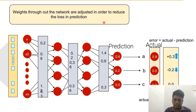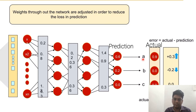The weights are adjusted to reduce the loss in prediction. After updating the weights, the new predicted values are 0.6, 0.2, and 0.0. Comparing with the actual values, the probability has improved and so has the efficiency. However, there is still an error for A, B, and C, because we need to reach a probability of 0.9 for A.